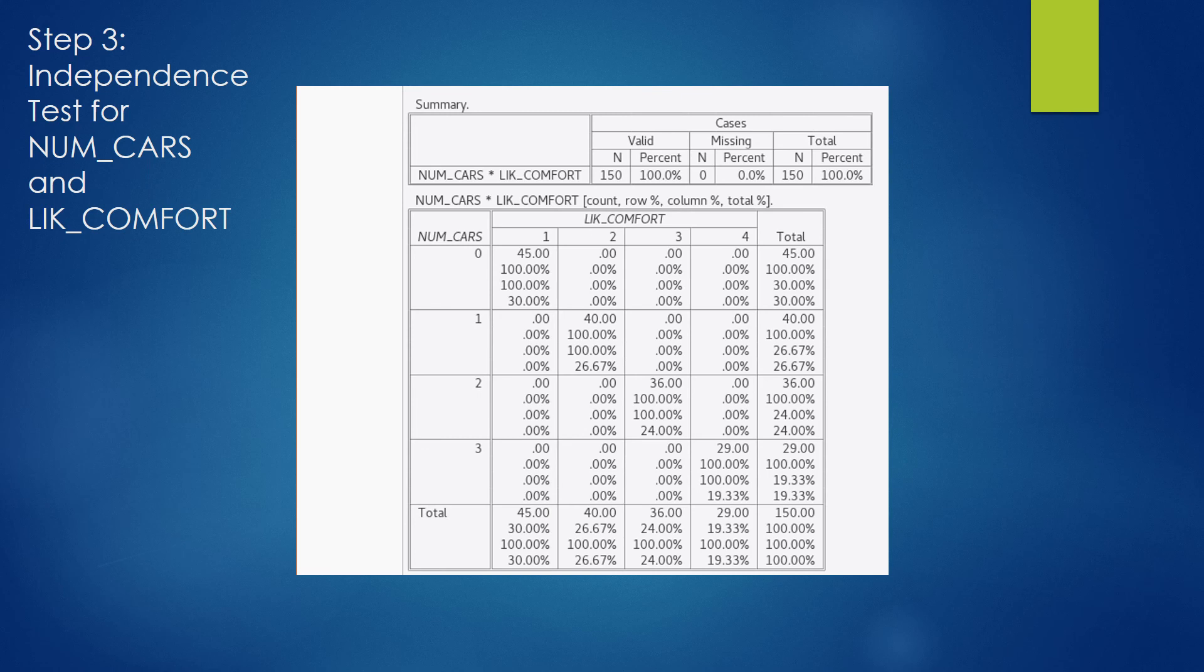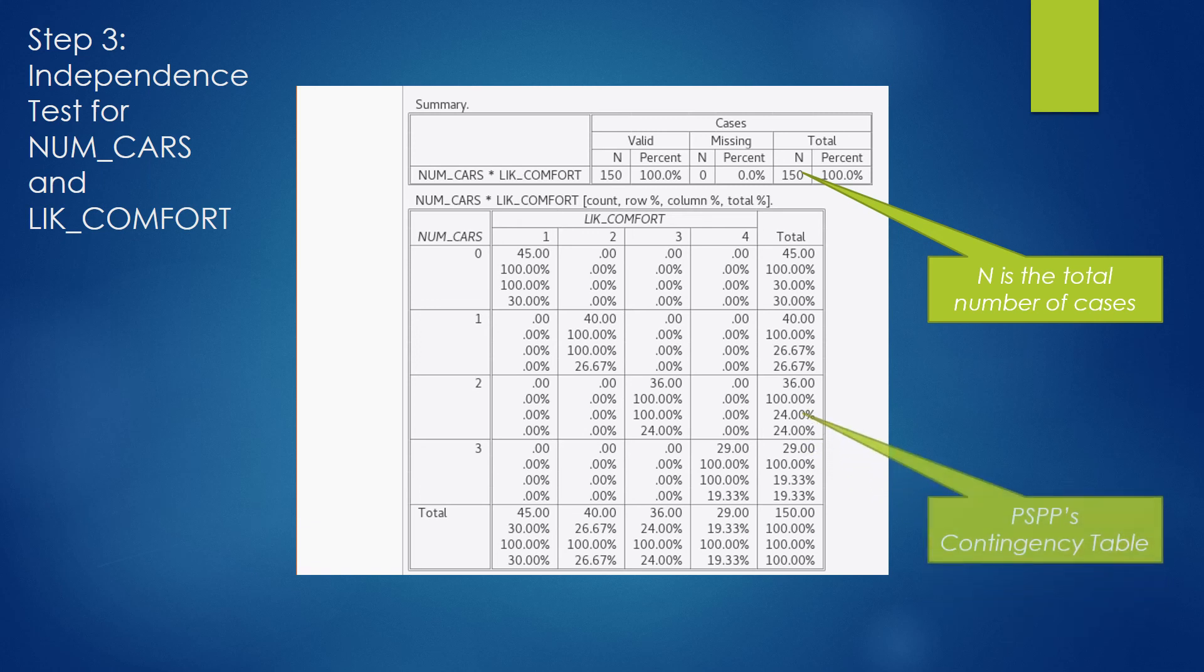PSPP will give you a lot of output for this test. It's a little confusing at first, but it's not so bad once you see the pieces for what they are. The very first piece is N, the total number of cases. The only important piece of information you really need from this first box is N. The second box, or matrix, is actually the contingency table that you've read about in your required reading. The format is a little weird, so I'm going to go over one cell with you so you get the general idea.